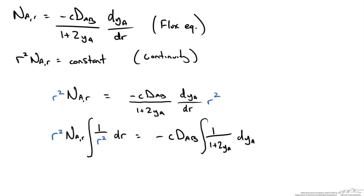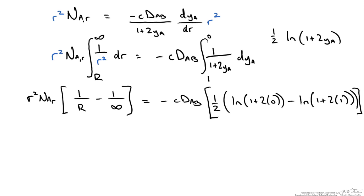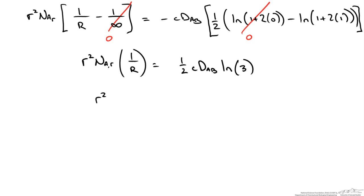We choose boundary conditions: we evaluate the flux of uranium hexafluoride from surface radius R to infinity. At R, the mole fraction y_A equals 1 since the reaction is instantaneous. At infinity, y_A equals 0. Evaluating these integrals with these boundary conditions gives an equation confirming that r² times the flux equals a constant. That constant involves the radius, concentration, diffusivity, and ln(3).